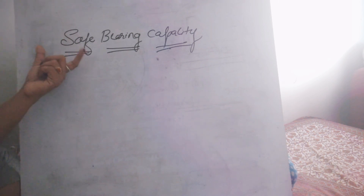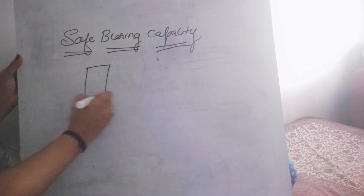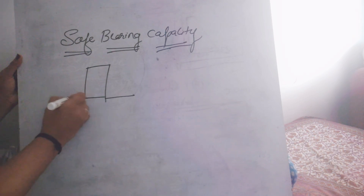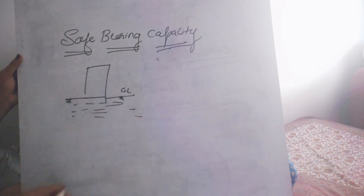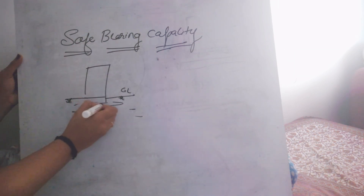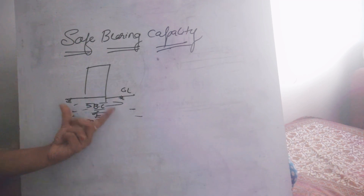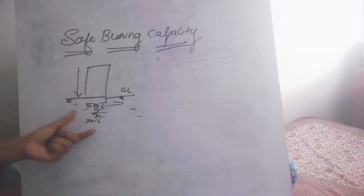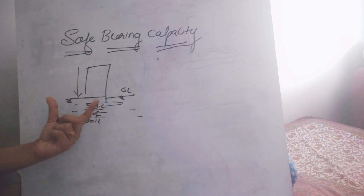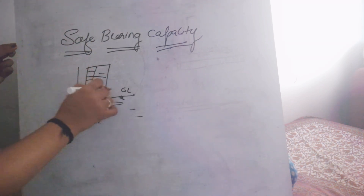Safe bearing capacity is the resistance of a soil towards the applied load. For example, this is your building and this is ground level — this is the soil. The SBC of soil is how much resistance the soil has to take the entire building load. The soil should have enough capability to resist all the loads applied by the building.